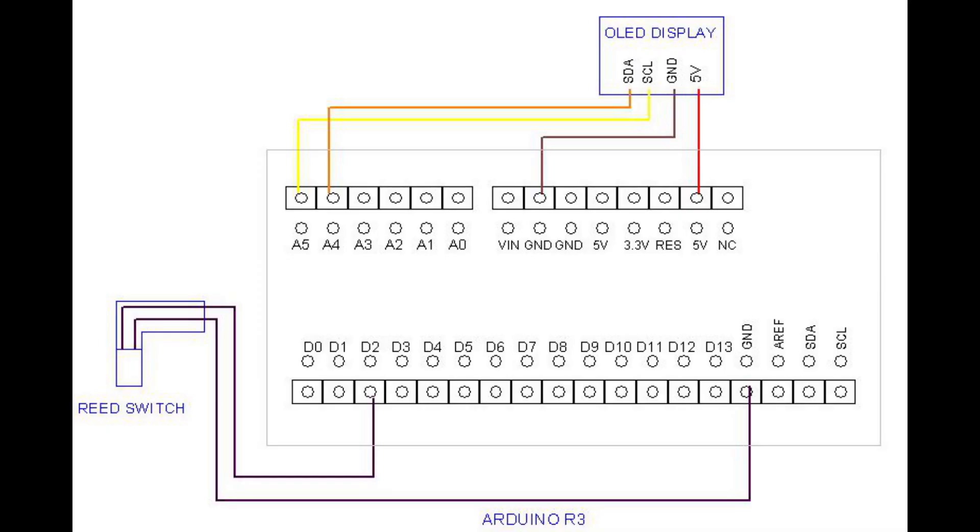I connected my OLED display to the Arduino using four wires. A red wire from OLED's VCC pin to the Arduino's 5 volt connector. A brown wire from the OLED ground pin to the Arduino's ground connector. A yellow wire from the SCL pin to the Arduino A5 which is analog pin 5 connector, and an orange wire from SDA pin to the Arduino's A4 analog pin 4 connector.